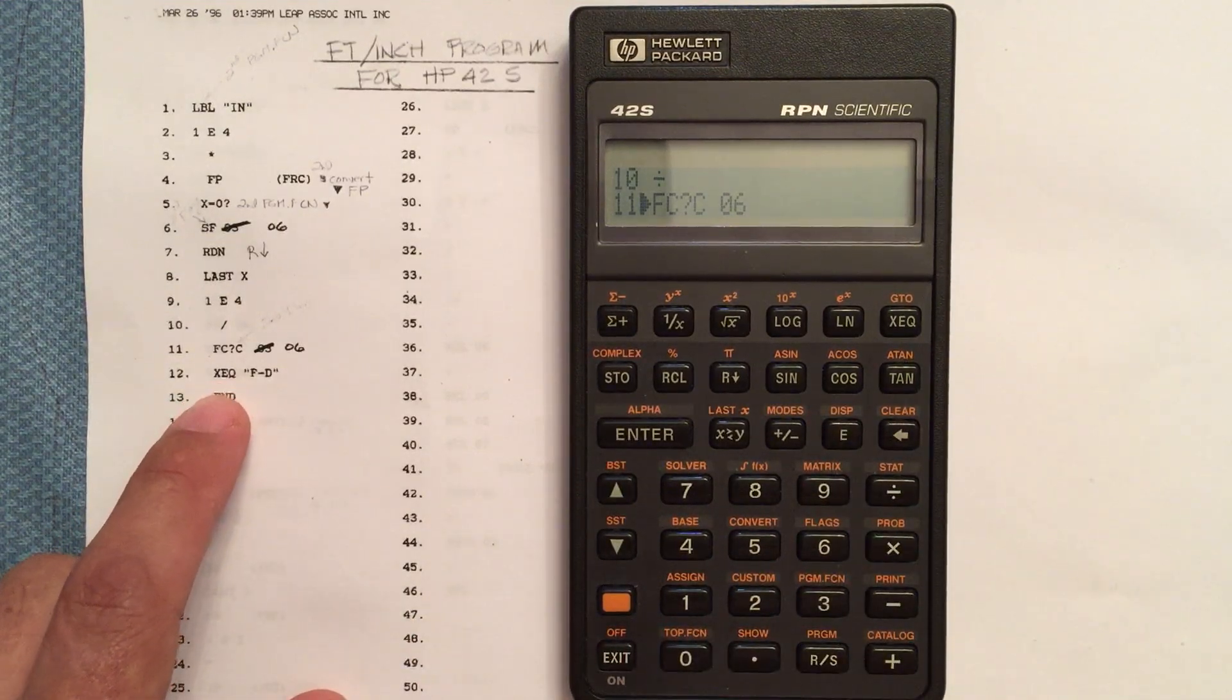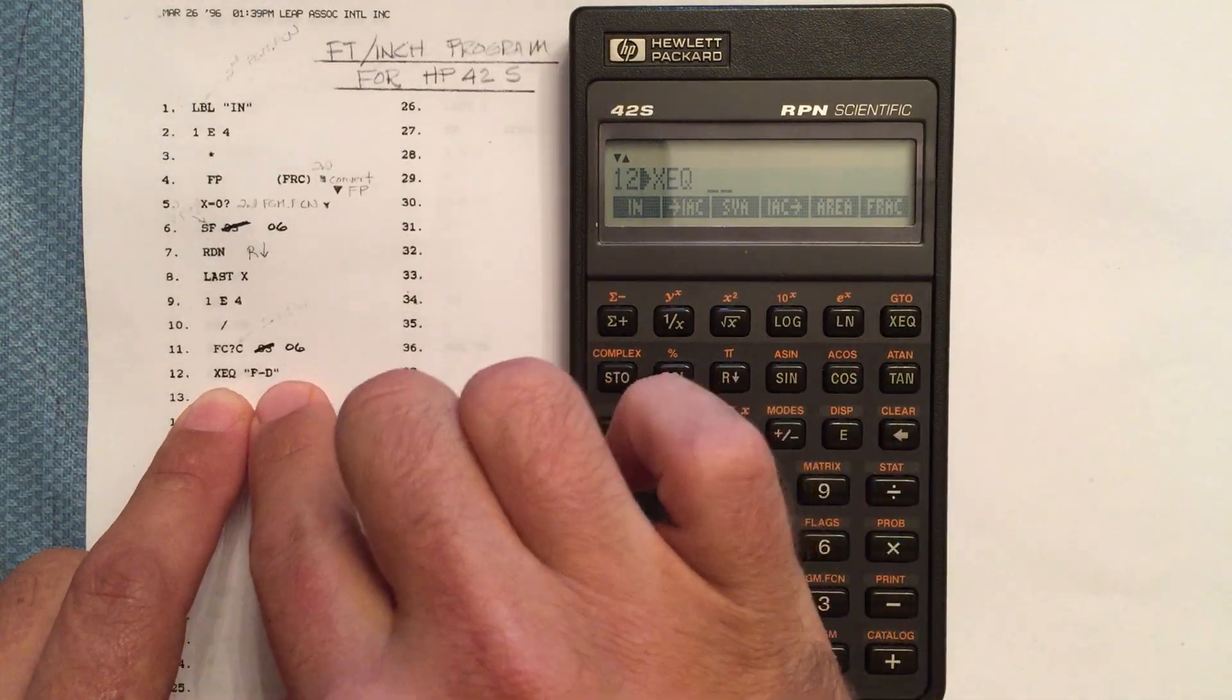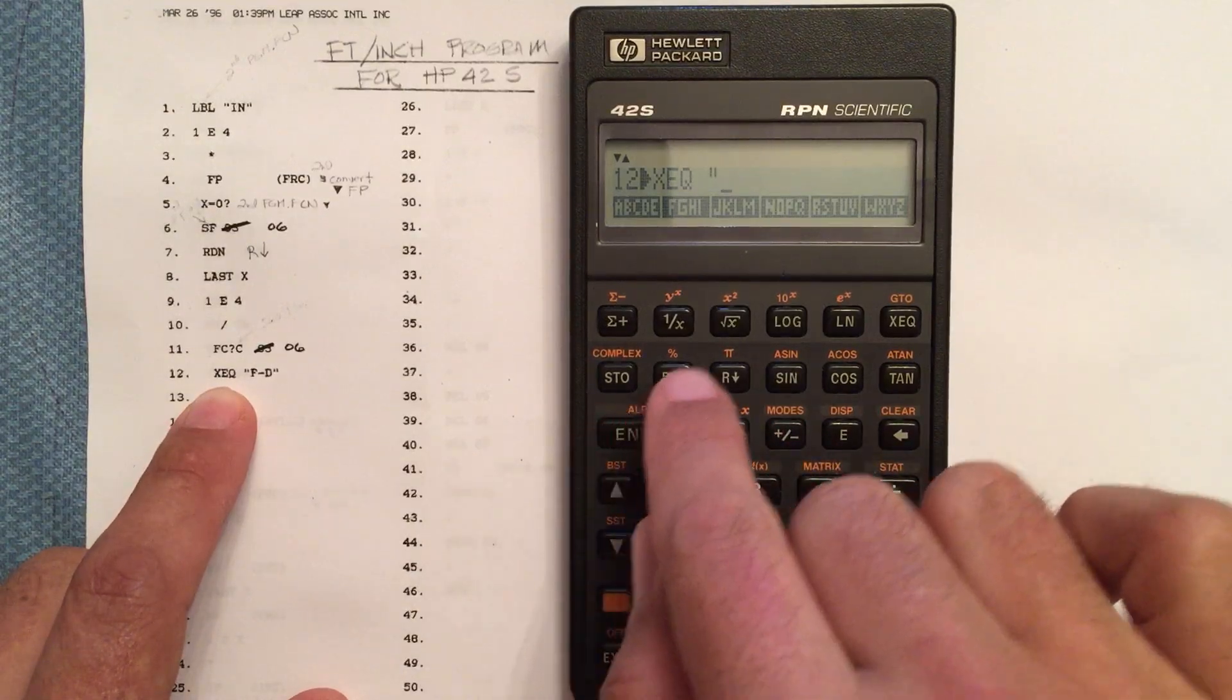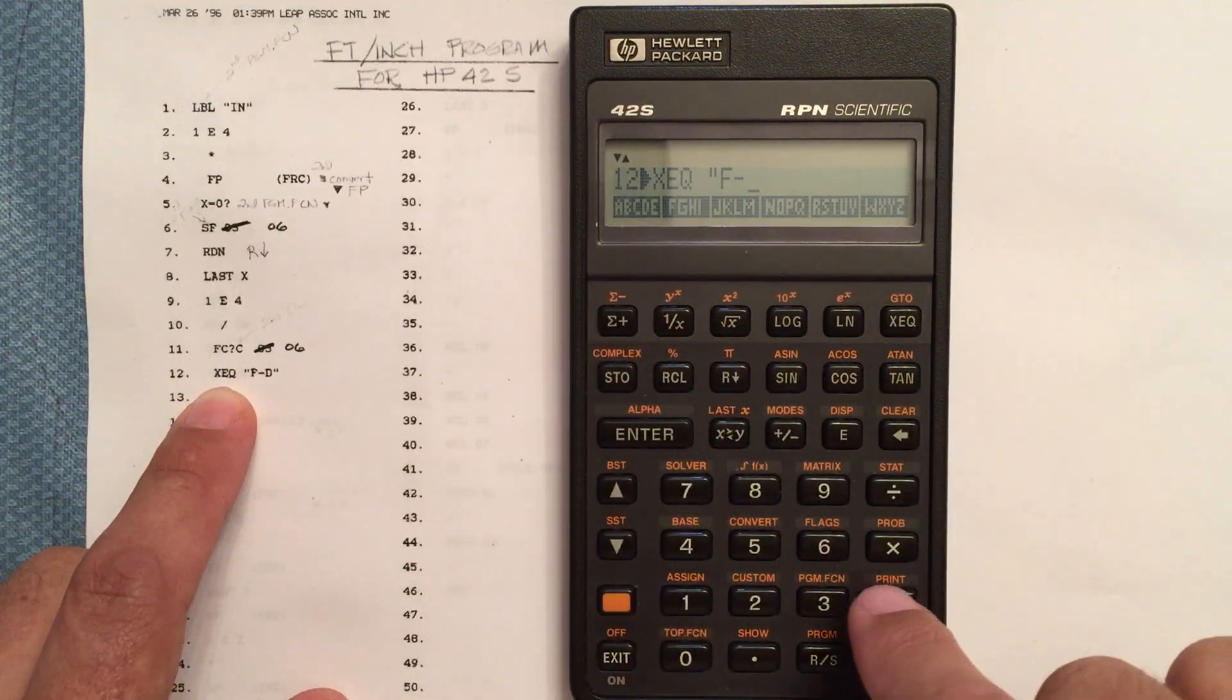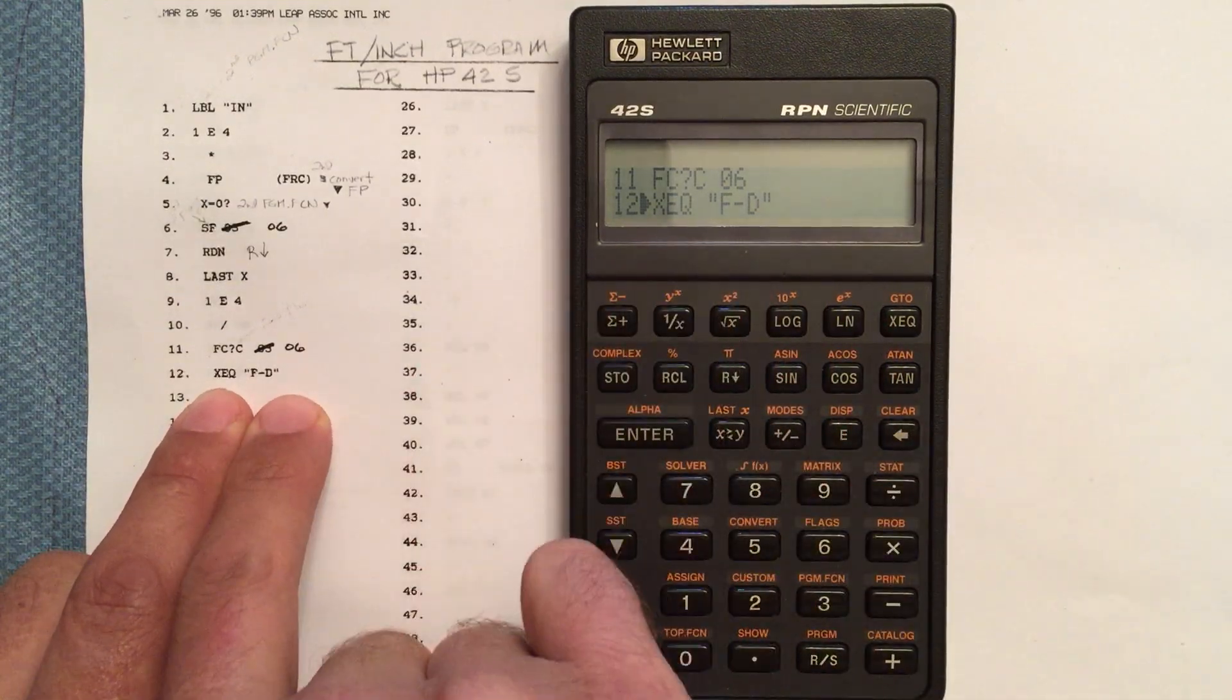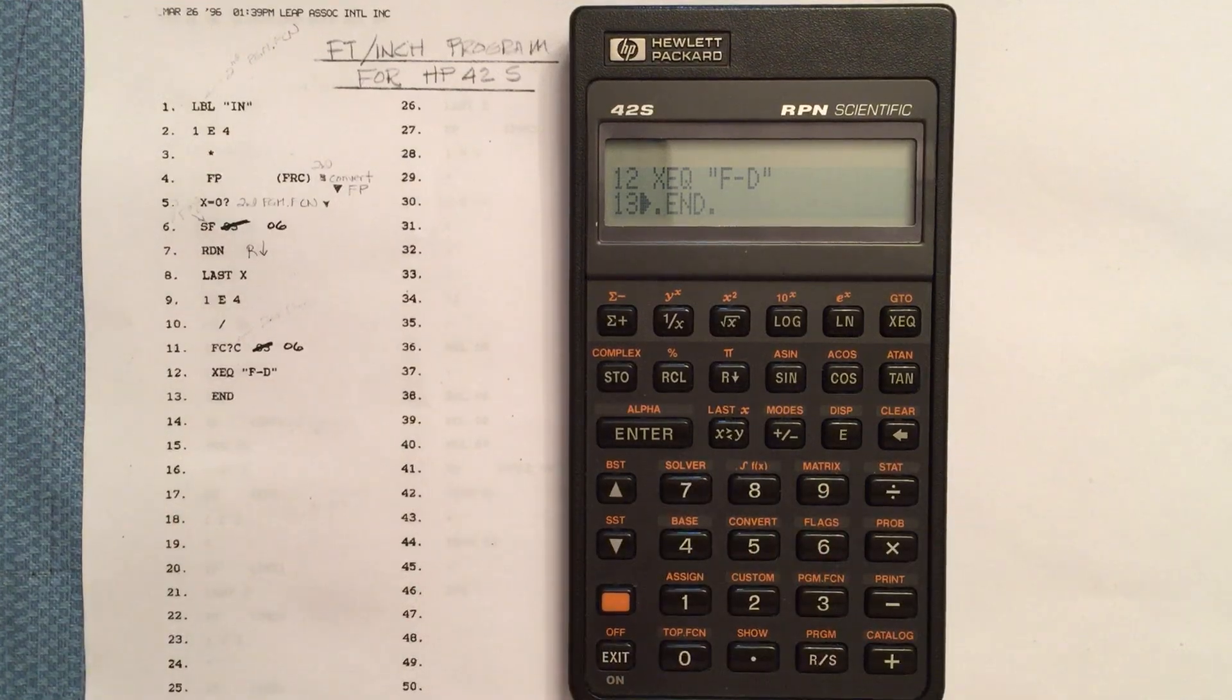We're going to enter N06, and we're going to execute. Normally we would have written a program called F-D, but we haven't entered that yet. We're going to put a placeholder in there. So I just hit the Enter key to go to the Alpha menu, and then F, and then I'm just going to do a minus sign, and D, and to finish that, press Enter. So now we're on line 12, and we've got execute F-D, and then end. We've already got the end there. We don't need to enter it. So here's the first part of that program.